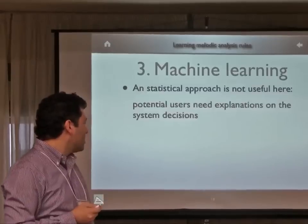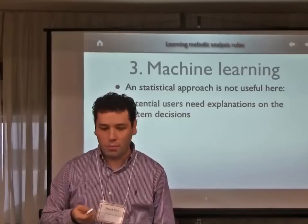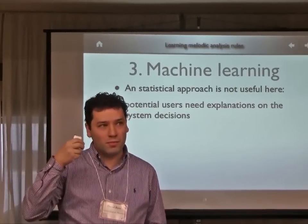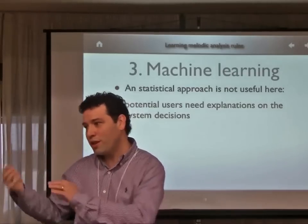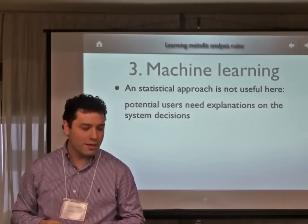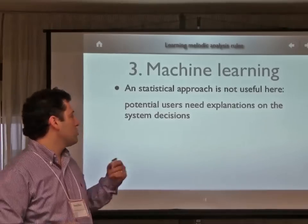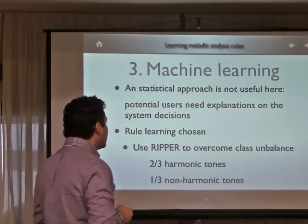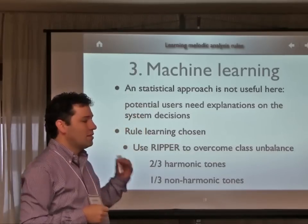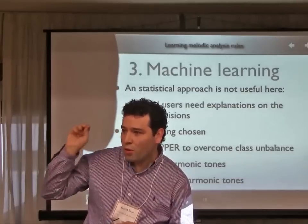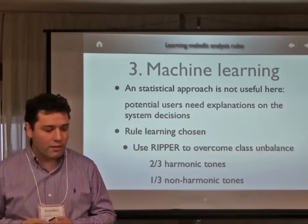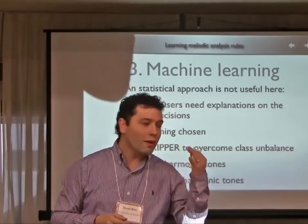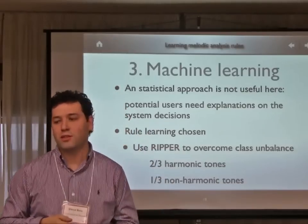Among the machine learning approaches we can use, we discarded statistical approaches because, as I said before, we want to be able to explain in human musical language to the user what the system does. So we chose to use rule systems. Among all the rule systems, we decided to use RIPPER by Cohen, because we have an unbalanced data set — we have many more harmonic tones than non-harmonic tones — and RIPPER considers first the smaller classes. This classifier has given us a good success rate.